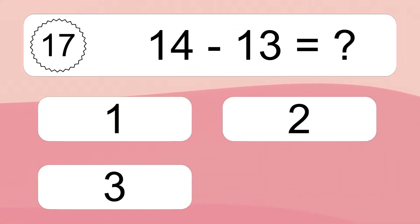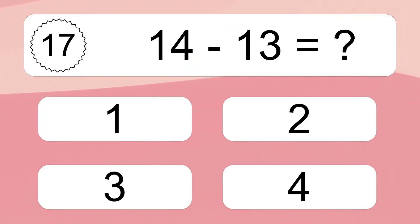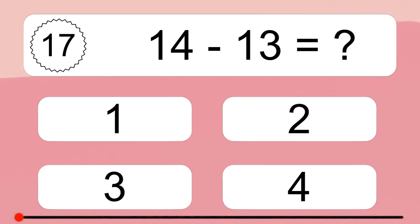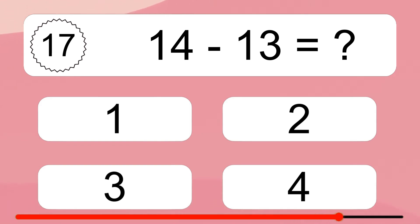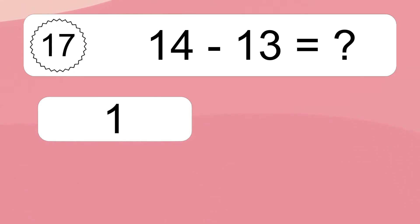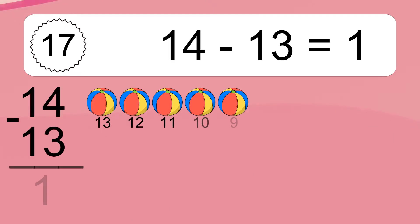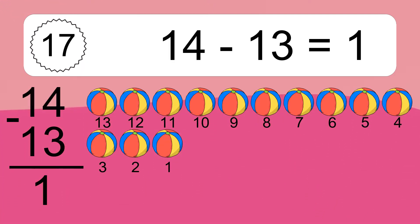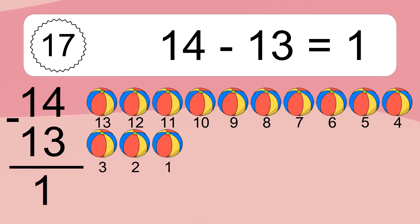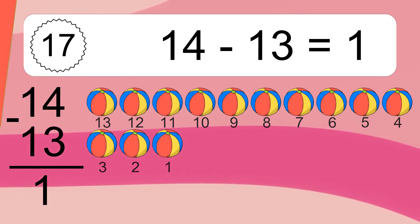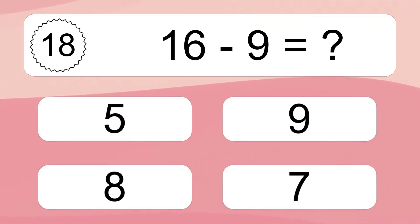14 minus 13 equals what? 14 minus 13 equals 1. Let's count it: 13, 12, 11, 10, 9, 8, 7, 6, 5, 4, 3, 2, 1.